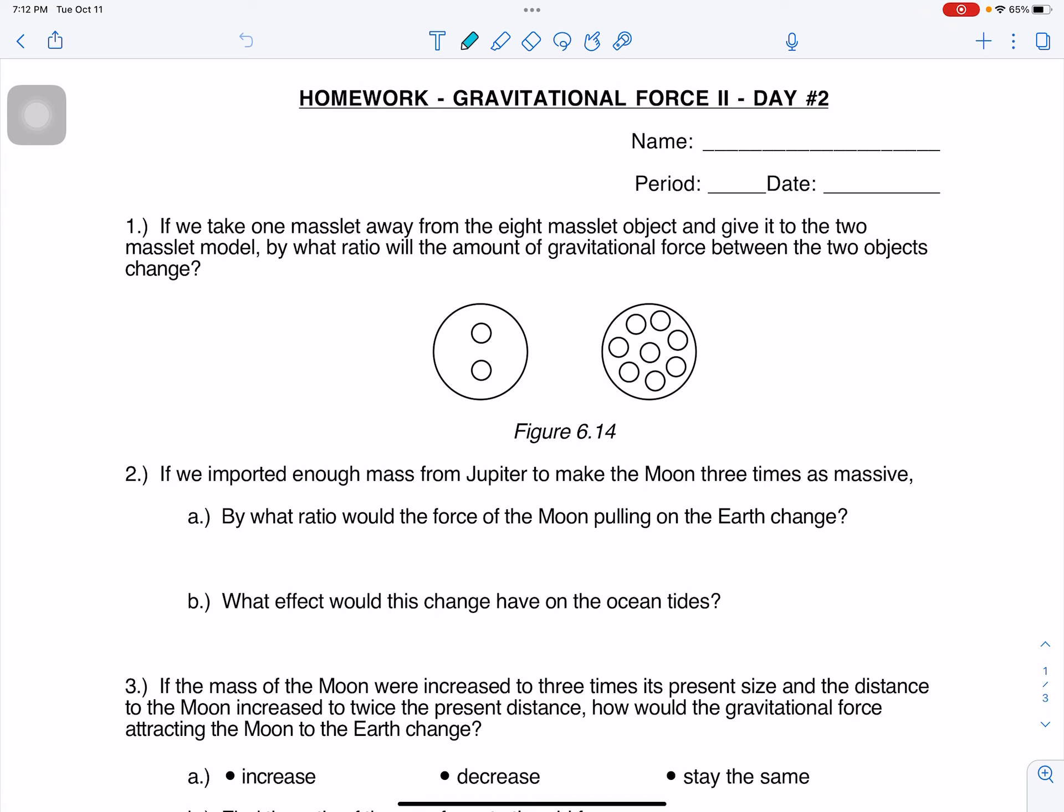Alright, so we know that initially we had 2 times 8, which is 16. And then in the new one, we're going to have 3 times 7, and that equals 21. So the force 2 to force 1 is just going to be 21 to 16.